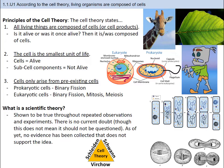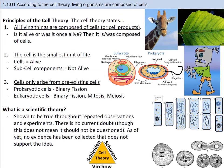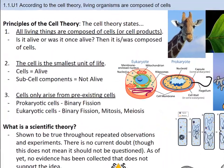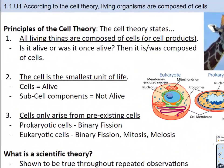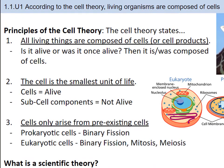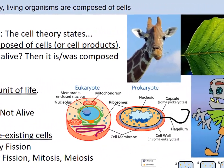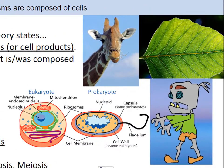All organisms contain one or more cells which are capable of carrying on the life activities needed by the organism. This idea is often referred to as the cell theory — a scientific theory which describes the properties of cells. These cells are the basic unit of structure in all organisms and also the basic unit of reproduction. All living organisms are composed of cells. Multicellular organisms, for example humans, are composed of many cells, while unicellular organisms, for example bacteria, are composed of only one cell. Cells are the basic unit of structure in all organisms.